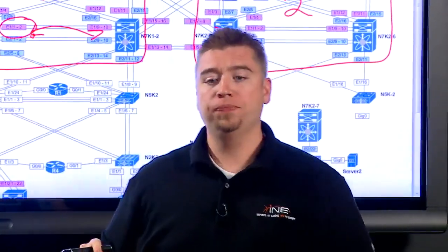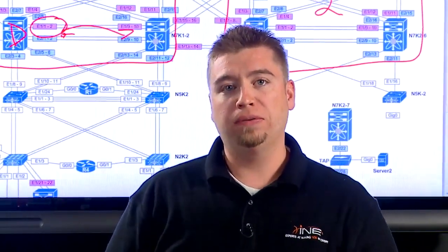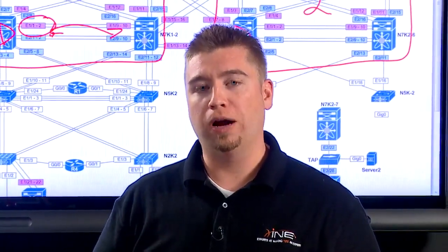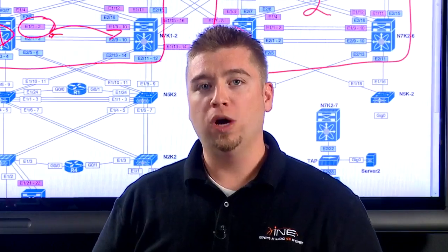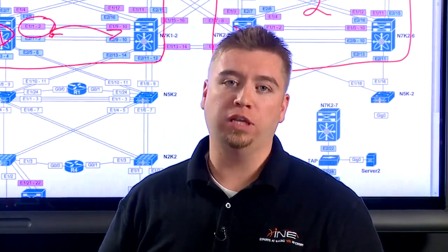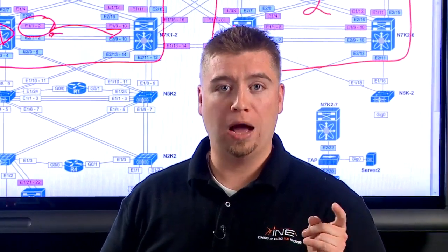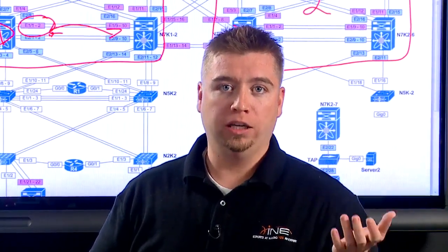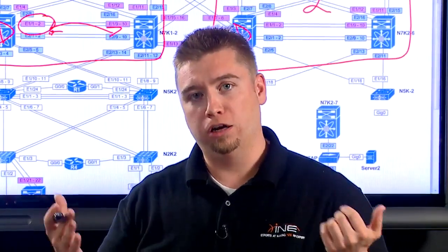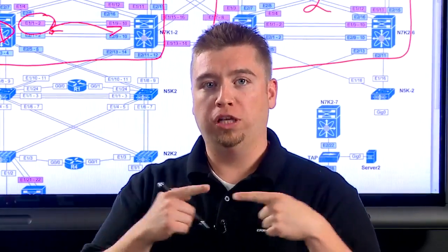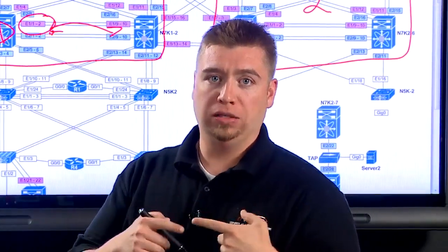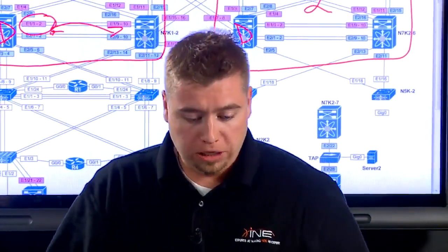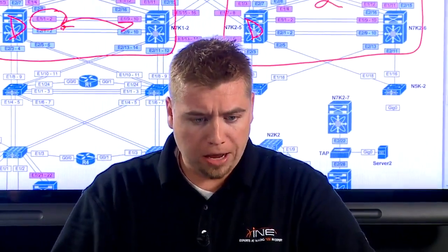This is also used in the Catalyst 6500 — if you have two VRFs and you want to leak traffic between them, you send a port out and come back in: on one side you have one end of the link in one VRF, on the other side it's in another VRF, and the routers treat them as independent processes. That's essentially what's happening here with VDCs.